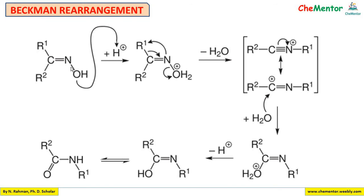First, the oxime undergoes protonation. The lone pair from the oxygen attacks on the proton to form a coordinate covalent bond. Now oxygen acquires a positive charge because it lost electrons in the process of forming the coordinate covalent bond with H⁺. Water is a stable molecule.